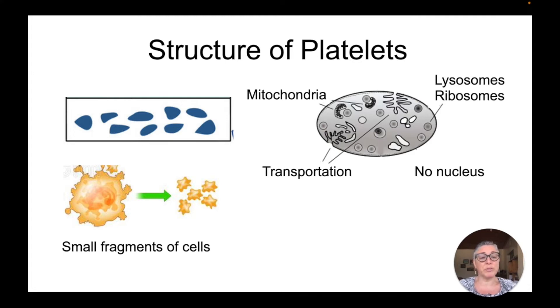For example, there's no nucleus in a platelet. It's not an actual cell. It does have lysosomes and ribosomes, mitochondria, and structures for transport inside the component or fragment.